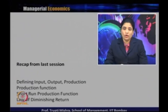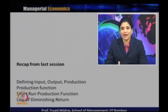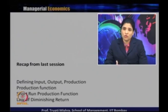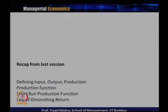In case of short run production analysis, we understood the law of diminishing returns — generally how the total product decreases when you are keeping one input fixed and going on adding or increasing the other inputs. After a certain threshold point, generally the total product decreases, average product decreases, and also marginal product leads to a negative segment. In today's class we are going to discuss about the long run analysis of production, specifically the return to scale.